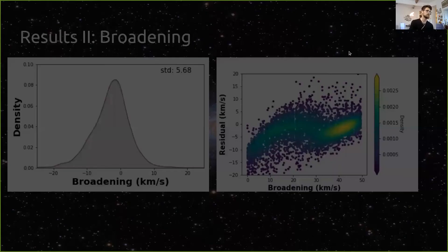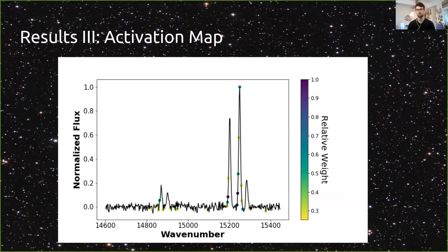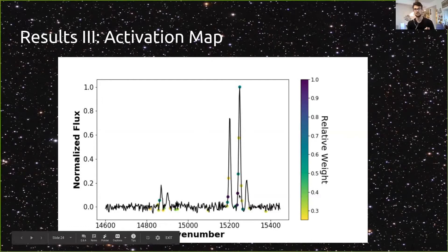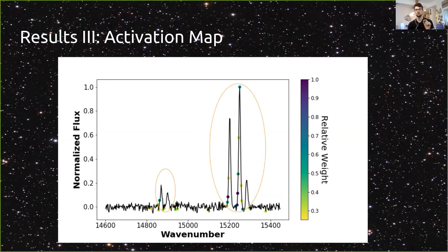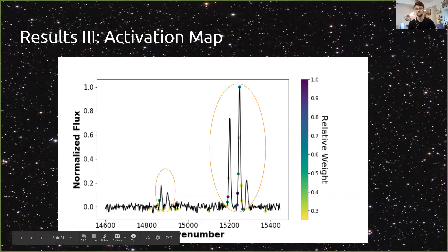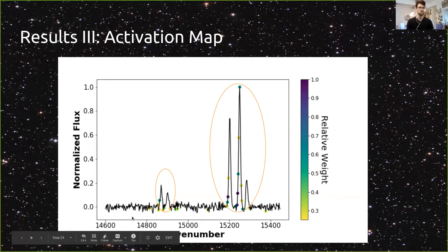As a sanity check, we created an activation map to verify the network is learning from the right features — specifically that it's focusing on H-alpha, the N2 doublet, and the S2 doublet, not the noise between peaks. The activation map confirms the relative weights are centered on the H-alpha and N2 emission and the S2 emission, including the area immediately around those peaks, not just noise. This gives us confidence the network is learning physically meaningful spectral features.